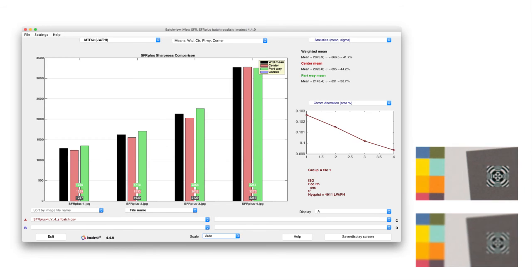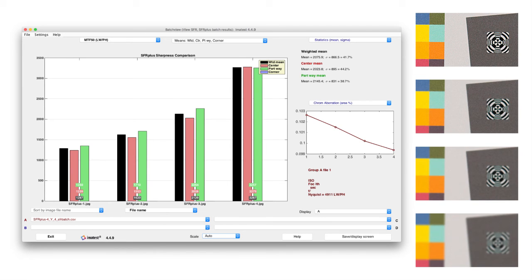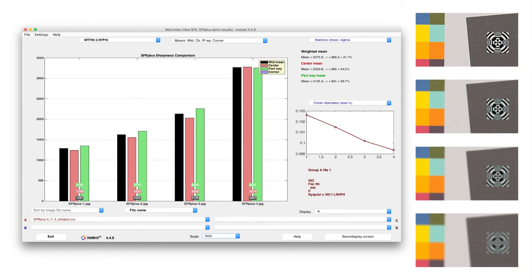IMATEST's BatchView module can be used to examine the effects of capture parameters, such as different lens apertures or fixed focus distances.